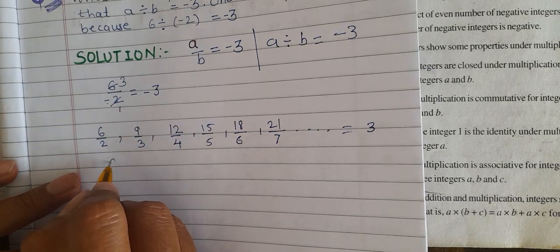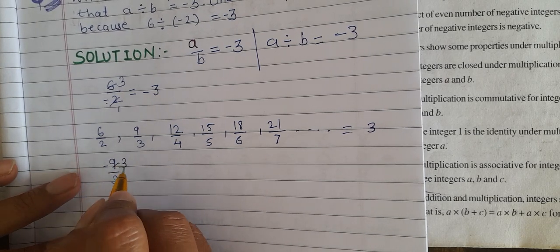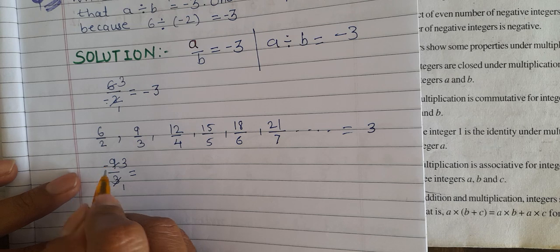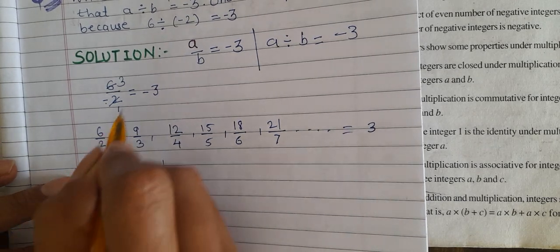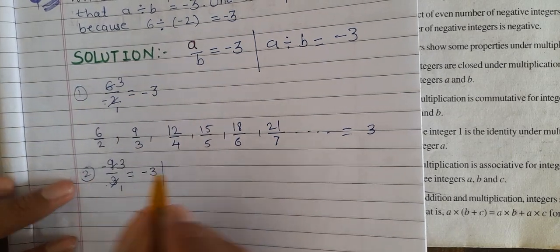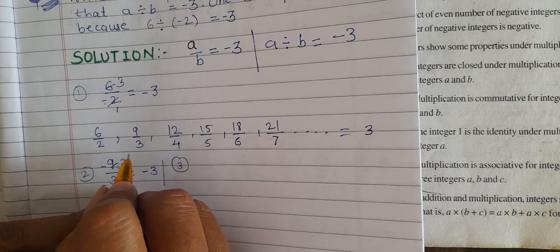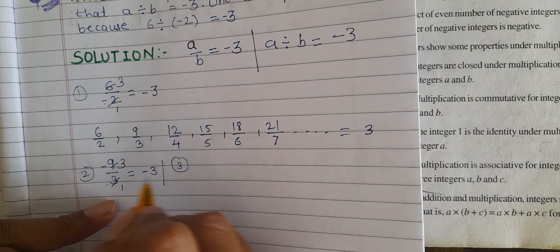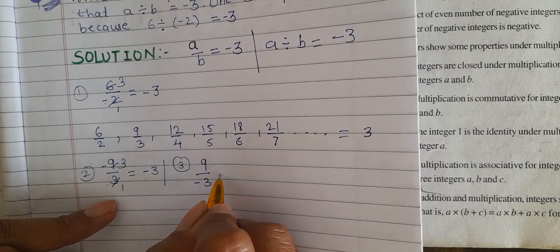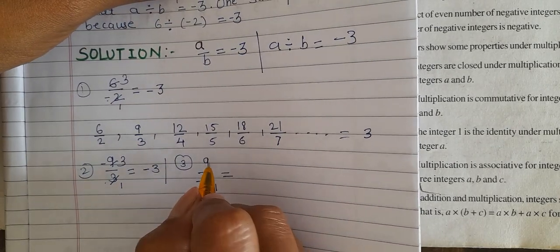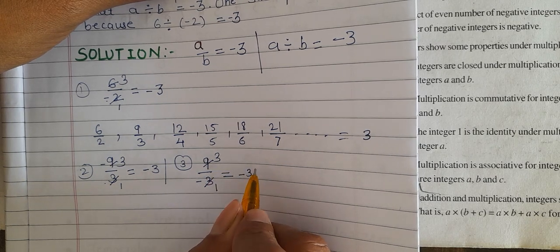So we have minus 9 divided by 3, so 3 times 3 is 9, but we need the answer to be minus 3. The first pair, second pair, third pair - the answers are minus 9 plus 3, then plus 9 minus 3. This gives us minus 3.